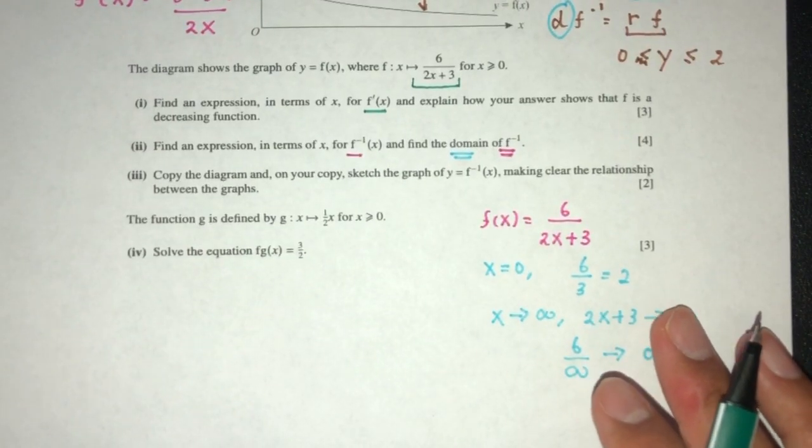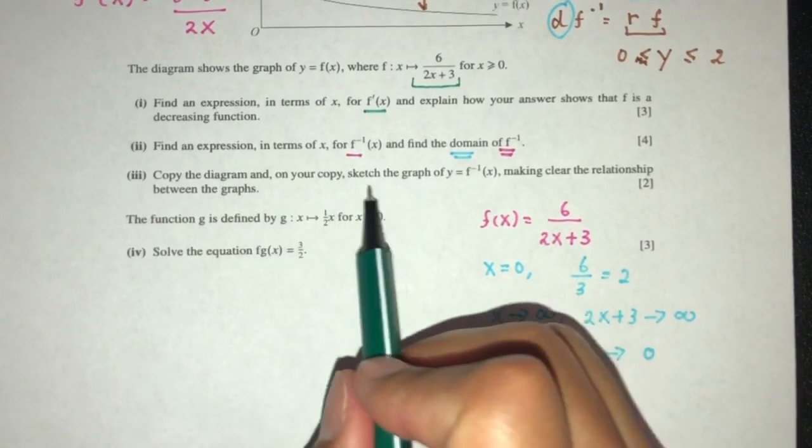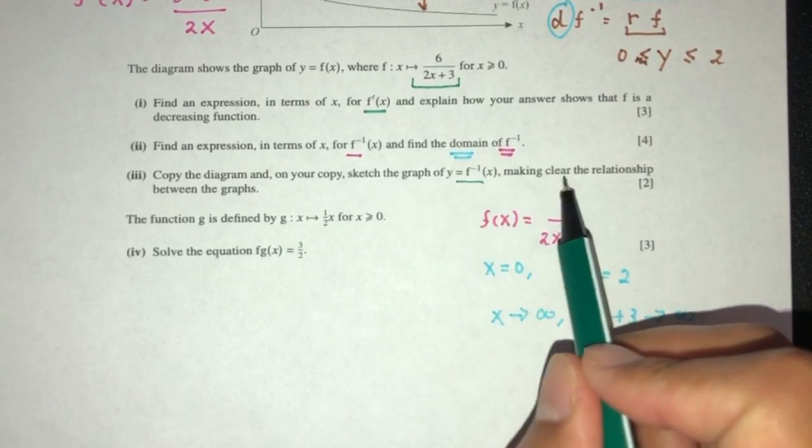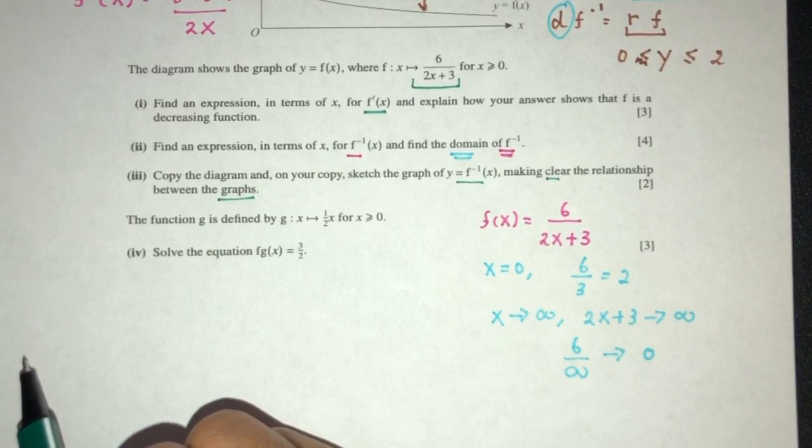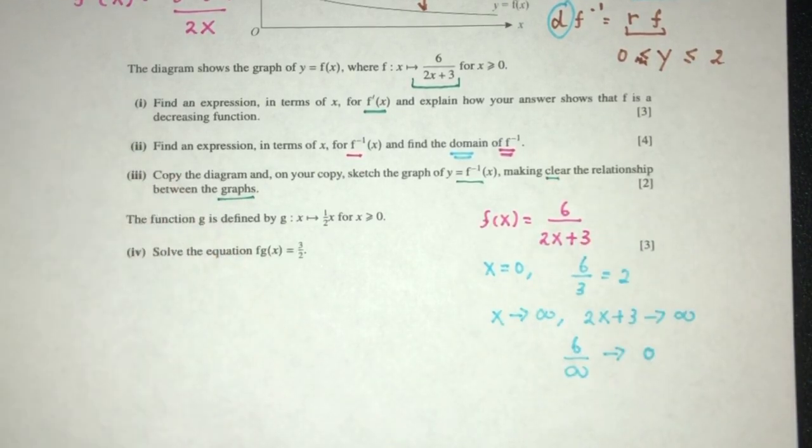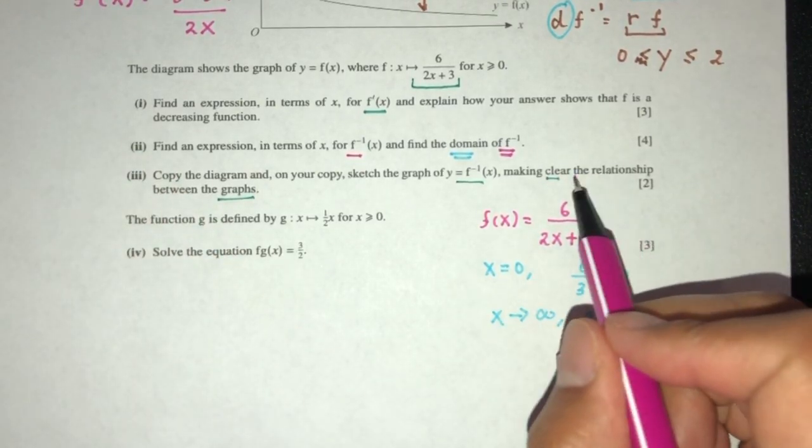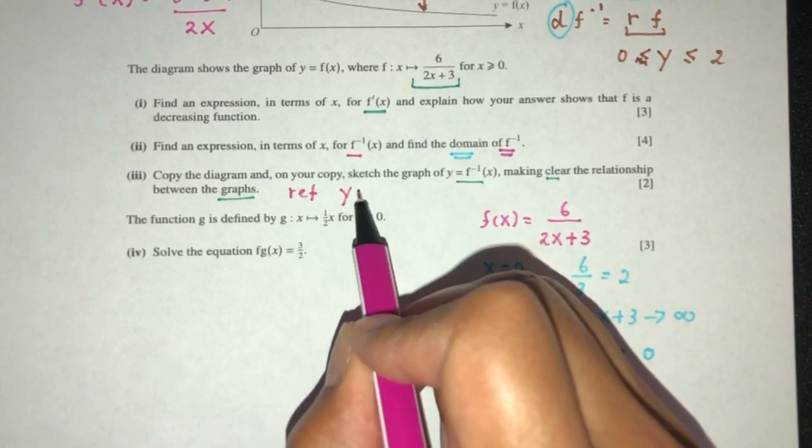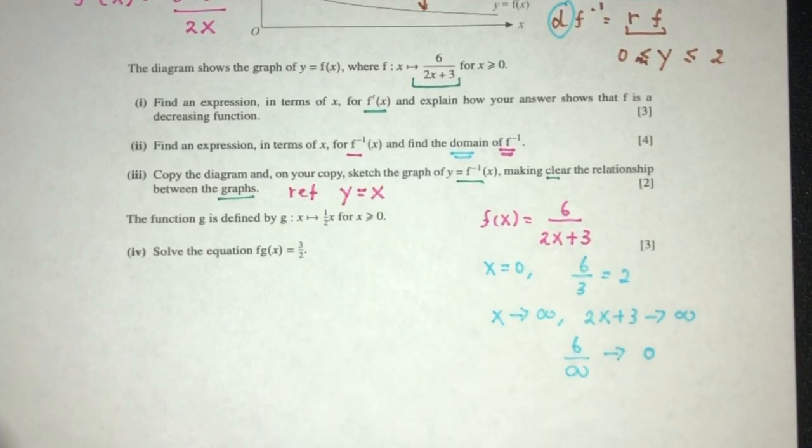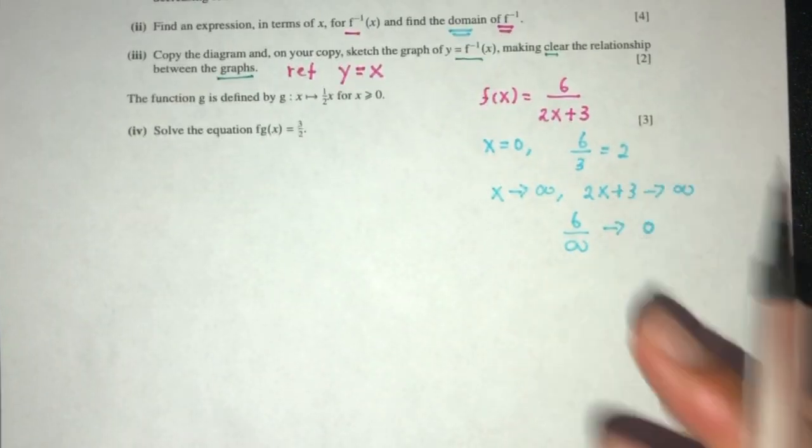For part 3, we have to copy the diagram and sketch the graph of f inverse, making clear the relationship between the graphs. The relationship between a graph and its inverse is simply reflection in the line y equals x. Let me make a sketch.